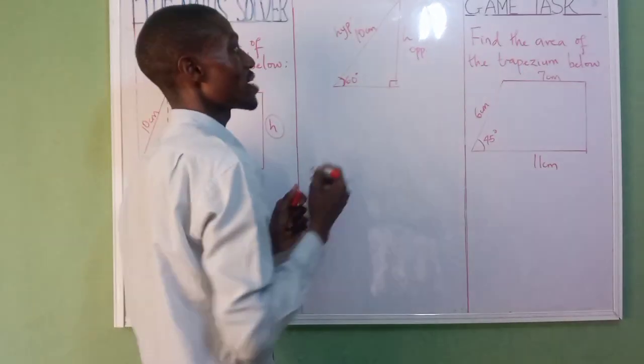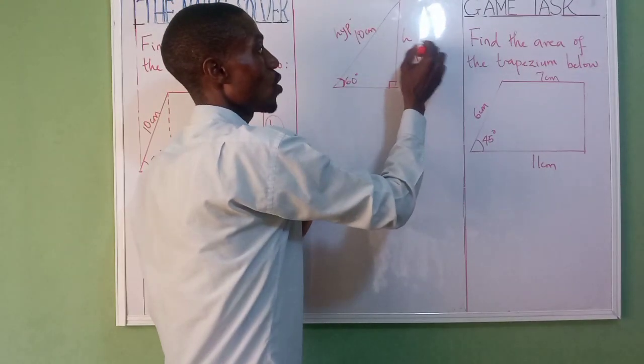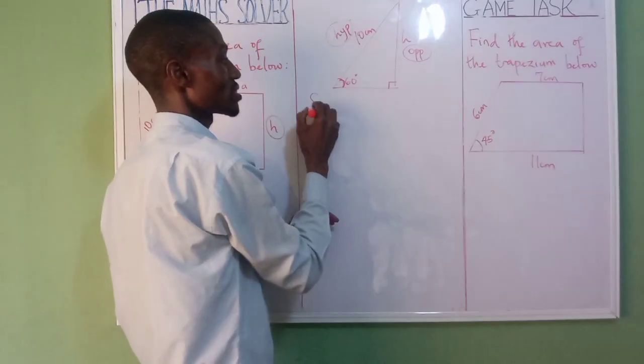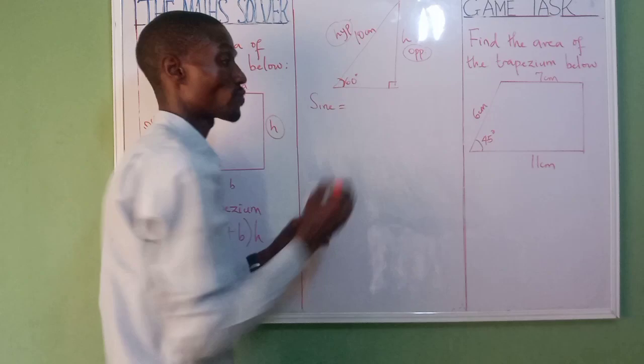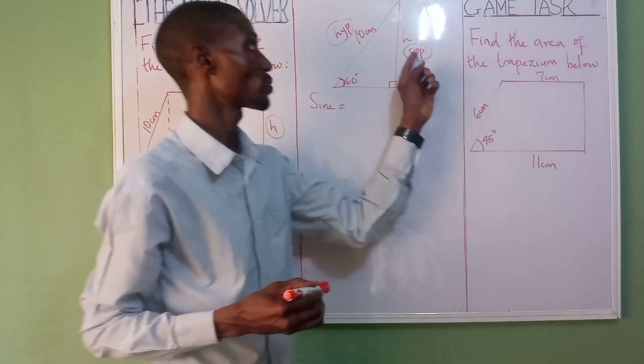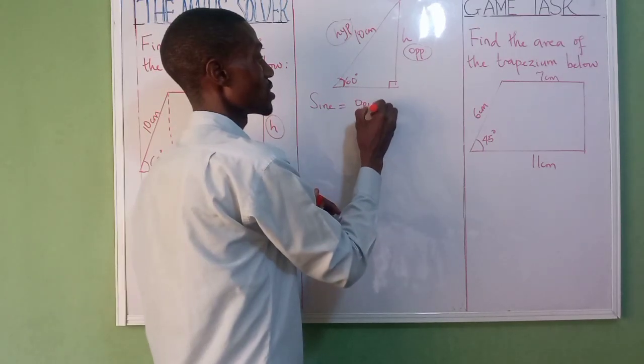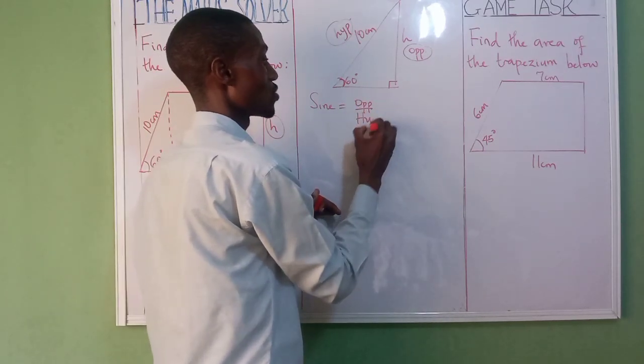So here we now combine opposite and hypotenuse together. That's why we now use sine. Don't forget, the formula for sine is opposite over hypotenuse, Pythagoras. So the formula is opposite over hypotenuse.